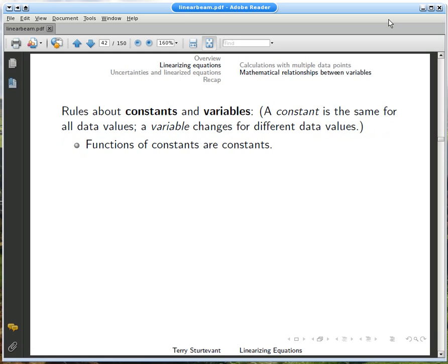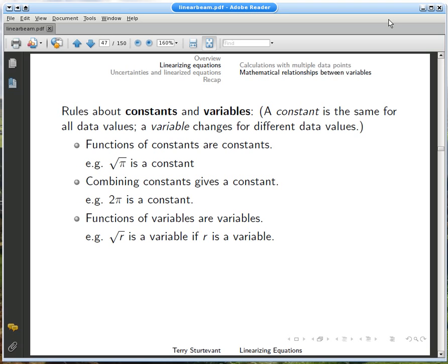There are two kinds of quantities in any equation: constants and variables. A variable is a number that is different for each data point. Combining constants gives new constants. Combining variables gives new variables. Combining constants and variables gives new variables.